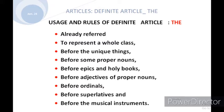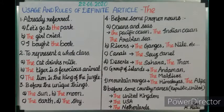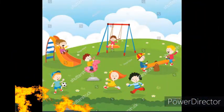Students, make clear about where we have to pronounce 'the' and where we have to pronounce 'the.' Now we will move to the rules. There are nine rules. The first one: already referred thing — an already referred thing, place, or material. There we will use the article 'the.'